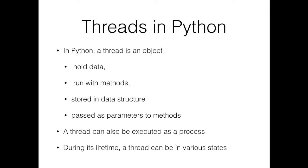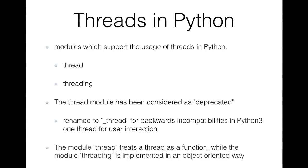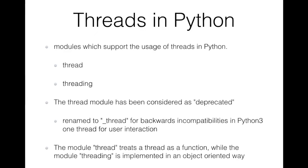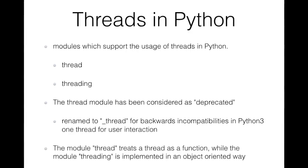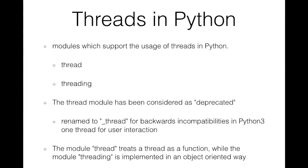In Python, a thread is an object like any other — it can hold data, run methods, be stored in data structures, and be passed as a parameter to methods. A thread can also be executed as a process, and during its lifetime it can have various states. In Python there are two modules that support threads: the thread module and the threading module. Note that the thread module has been considered deprecated for quite a long time, so users are encouraged to use the threading module instead.